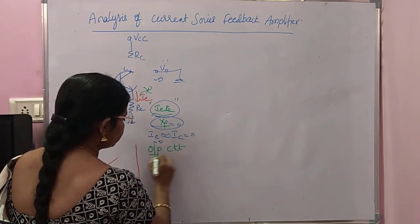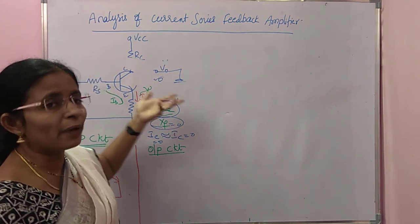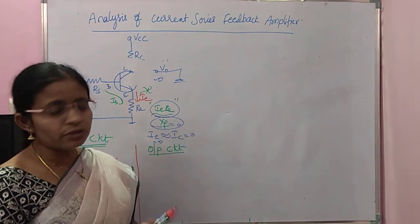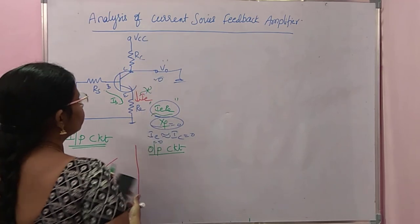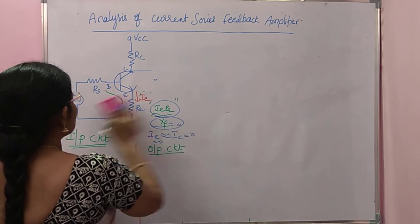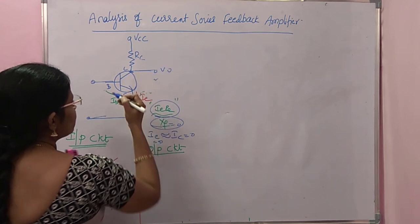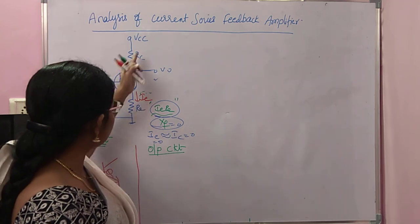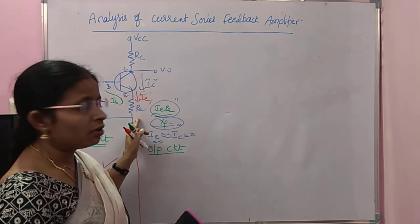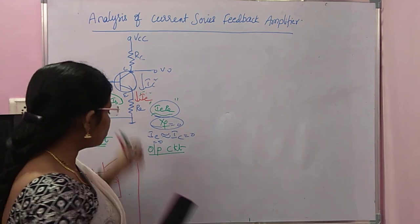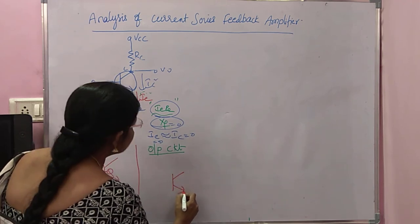Now we must find the output circuit. To find the output circuit, since it is series mixing, we make the input open, meaning Ia equal to 0. By opening it, IB becomes 0, but there still exists IC flowing through RC. So now RE is in the output circuit — it is not included in the input circuit because the input is open. RE is drawn in the output circuit.